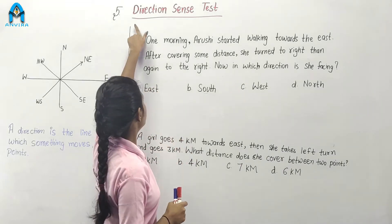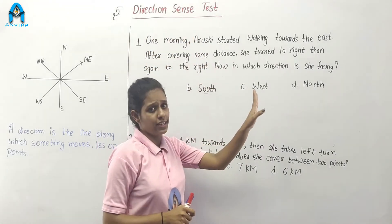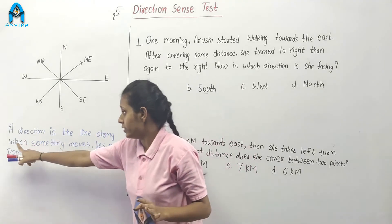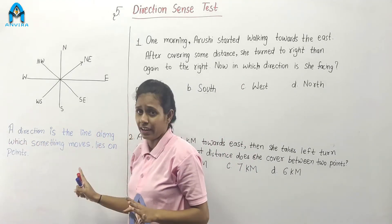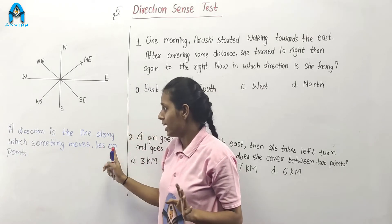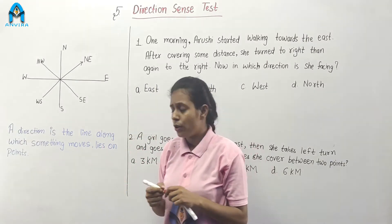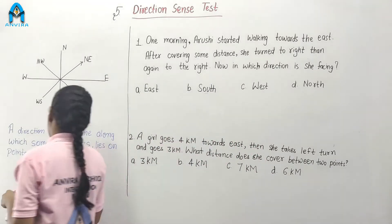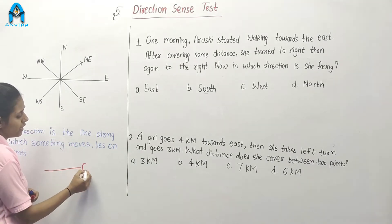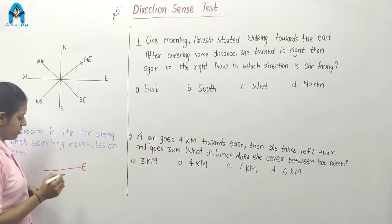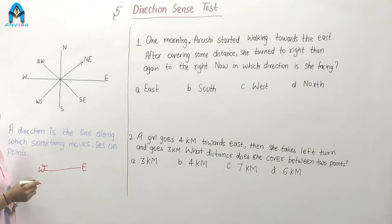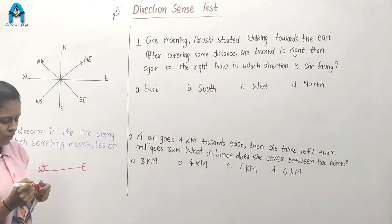Which is our next chapter? Direction. What is direction? Direction is the line along which something moves or lies on a point. When we go this side, we go in the direction of east. When we go this side, we go in the direction west.